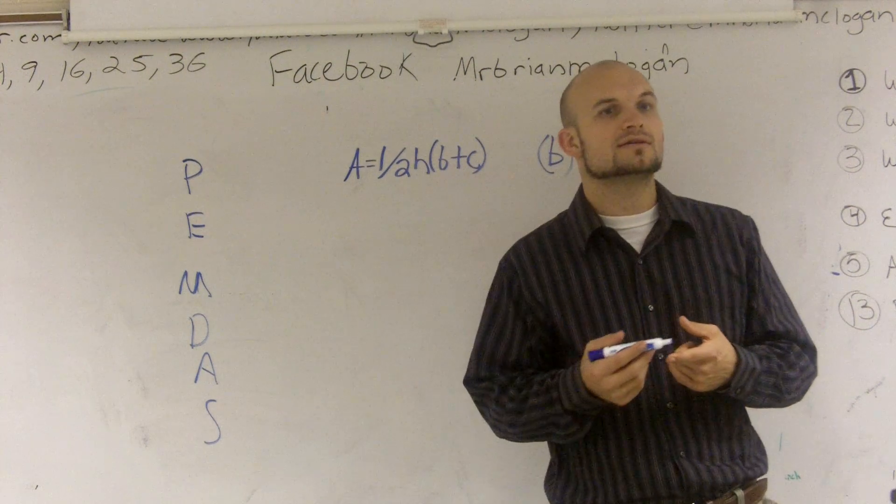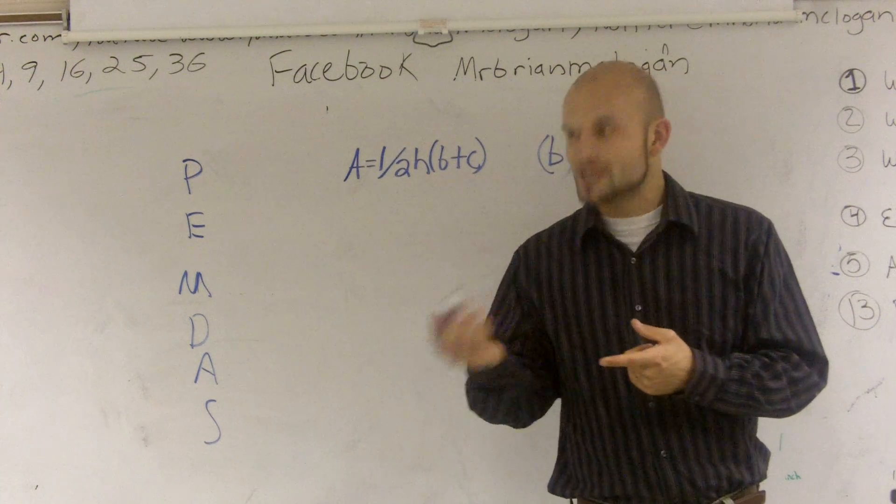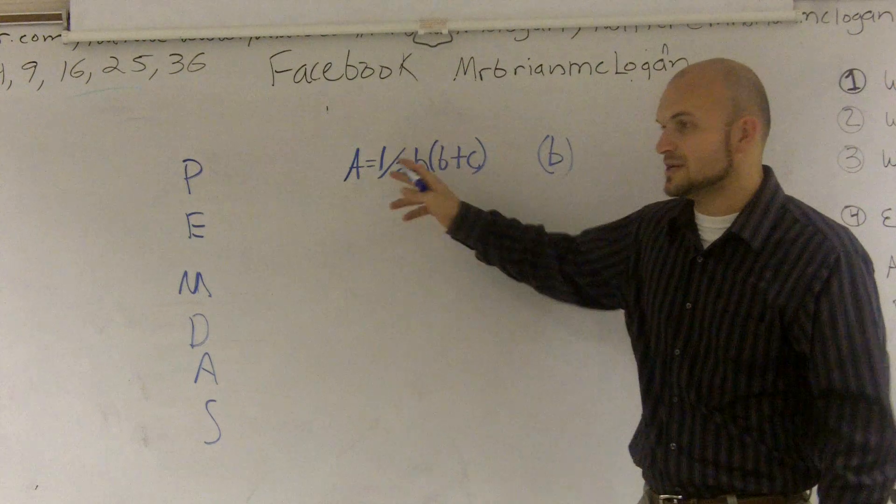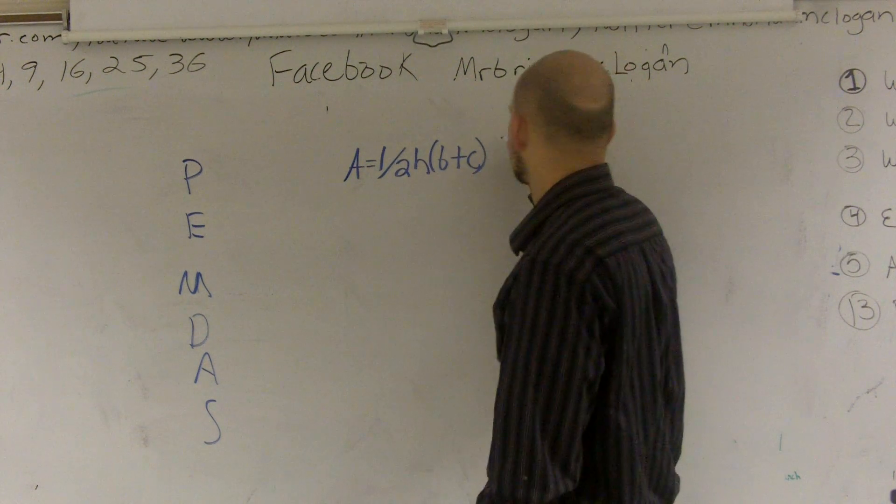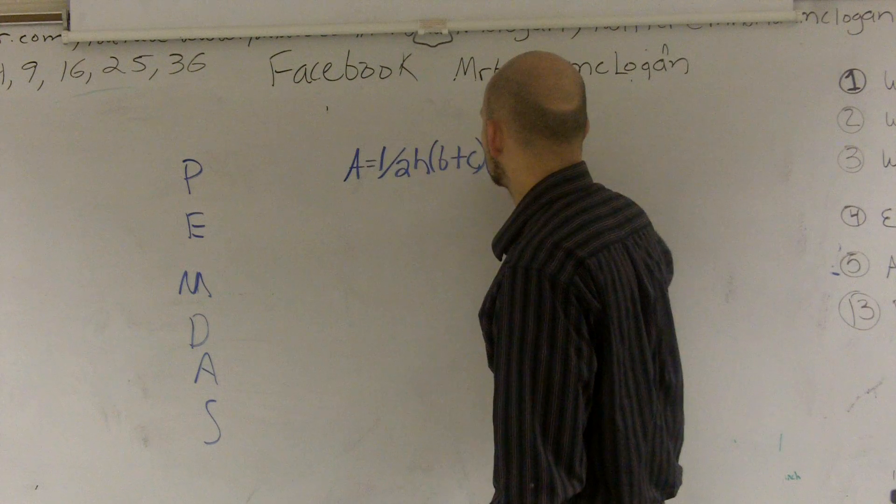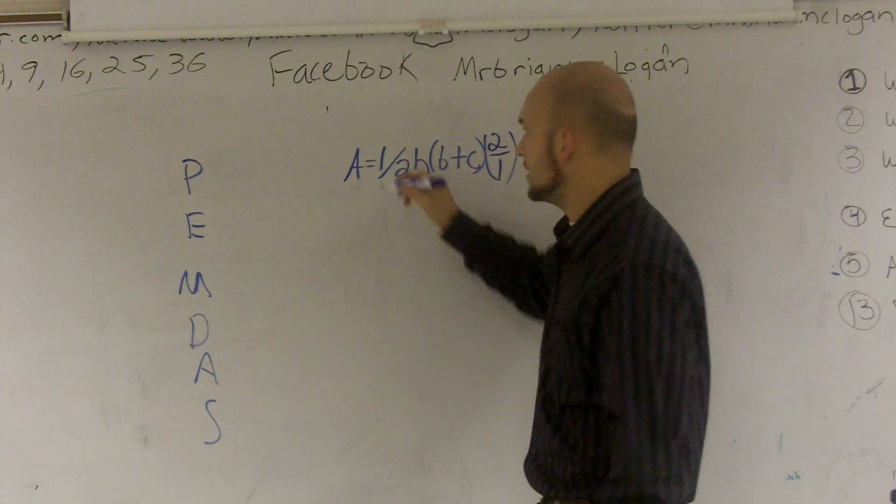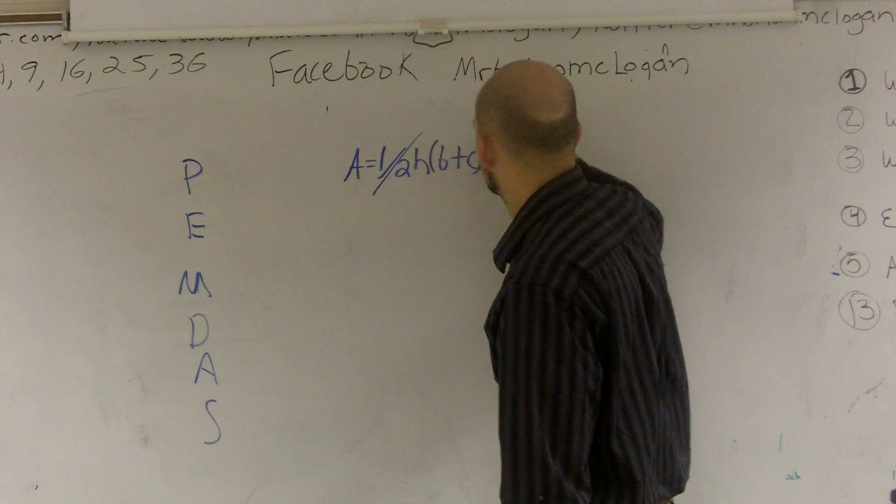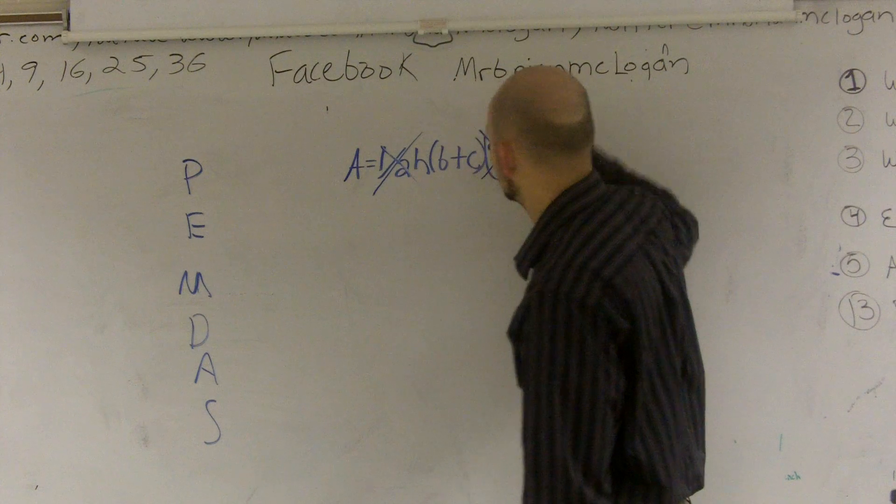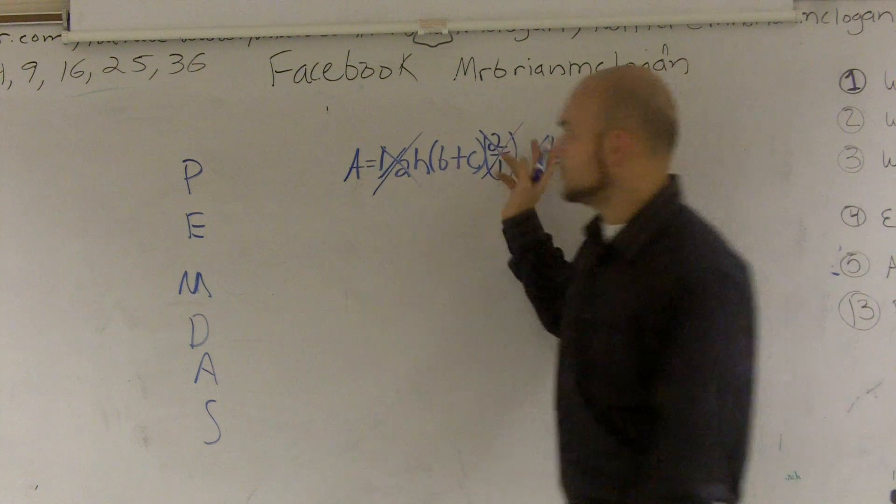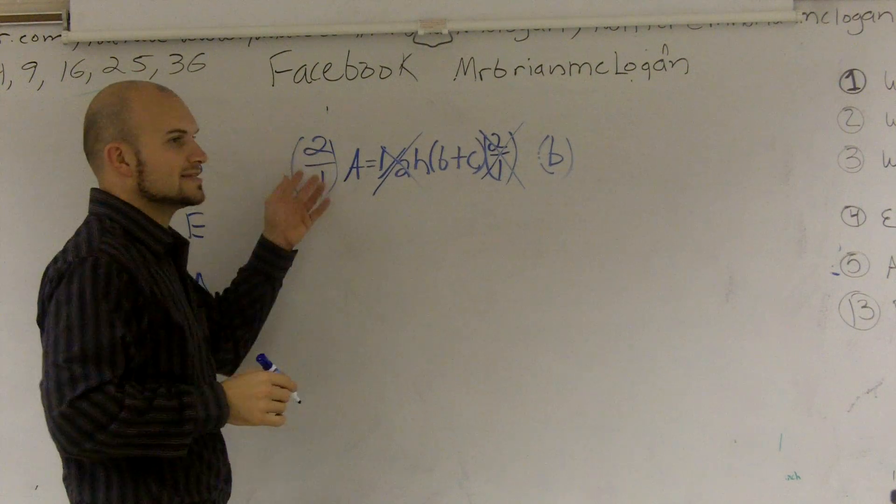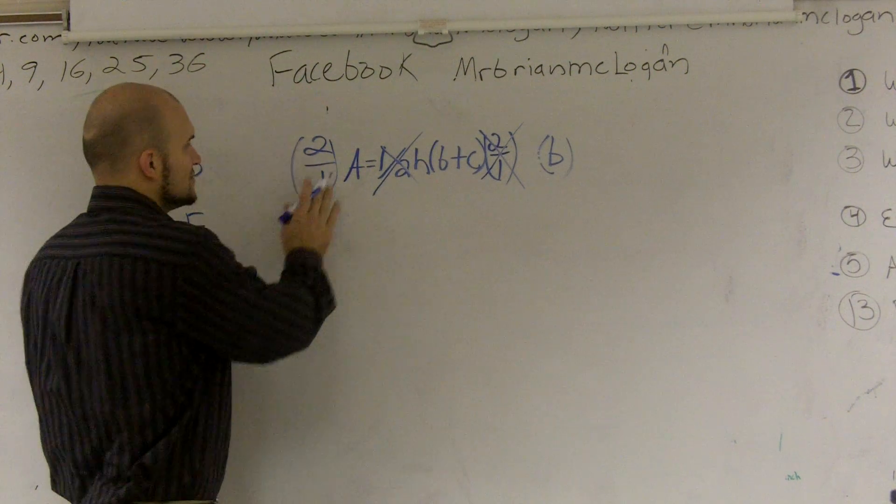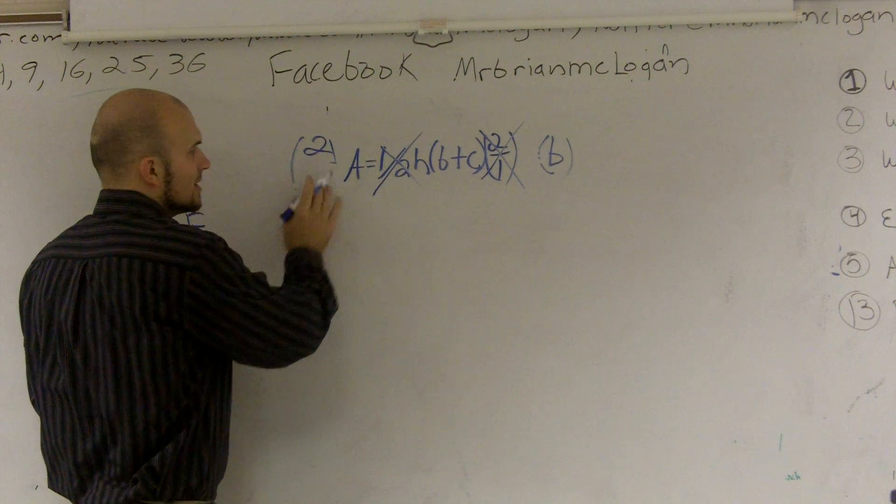...we like to multiply by the reciprocal. The reciprocal of one-half is two over one. Remember, a number times its reciprocal equals one, so these cancel out with each other. When you multiply by the reciprocal, whatever you multiply on the right side, you have to multiply on the left side. I'm just going to write it as a fraction, but you know that two over one is the same thing as two, right?